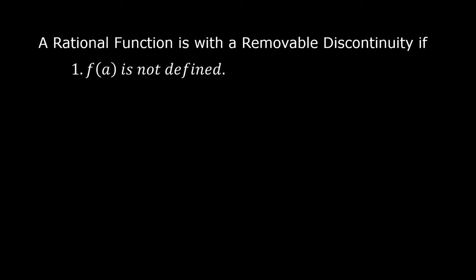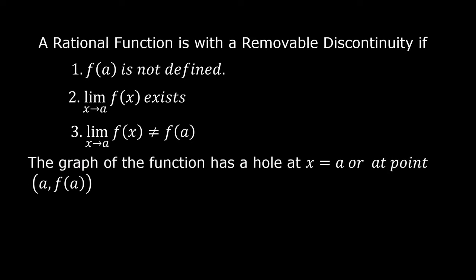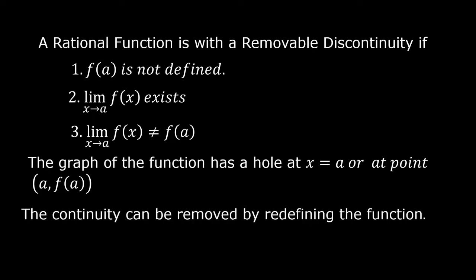A rational function has a removable discontinuity if: 1. f of a is not defined. 2. The limit of f of x as x approaches a exists. 3. The limit of f of x as x approaches a is not equal to f of a. The graph of the function has a hole at x equals a, or at point (a, f(a)). The discontinuity can be removed by redefining the function.